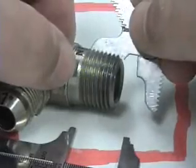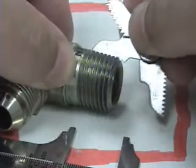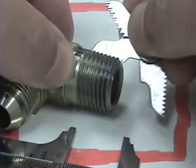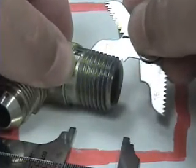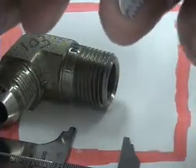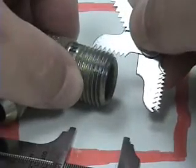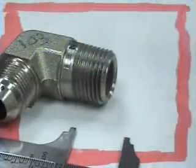You want to be sure that your thread pitch gauge goes all the way down in. See how it blocks the light at the roots and the tops of the threads. This is a good fit. So 14 threads per inch. Let's try a 12. No, it doesn't even fit. So a thread gauge is important also.